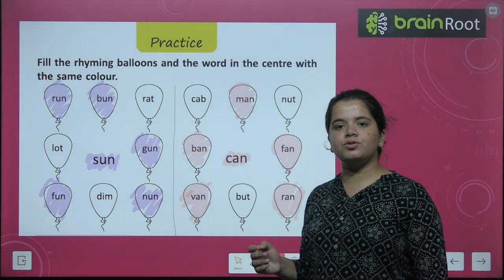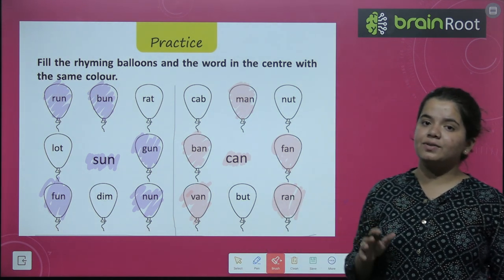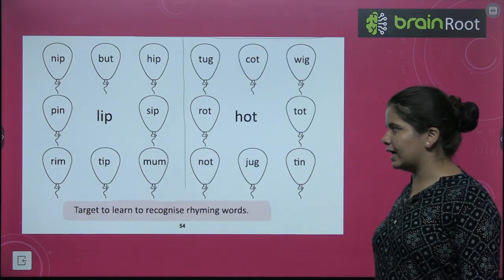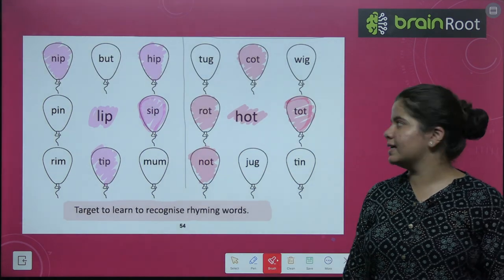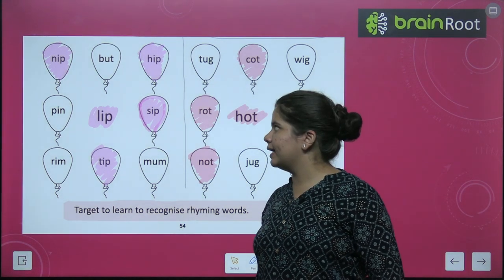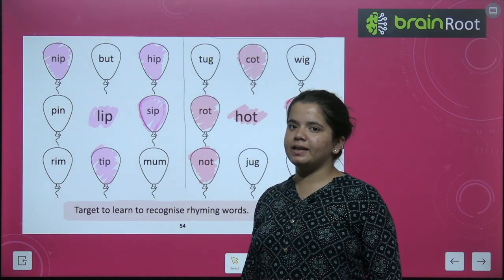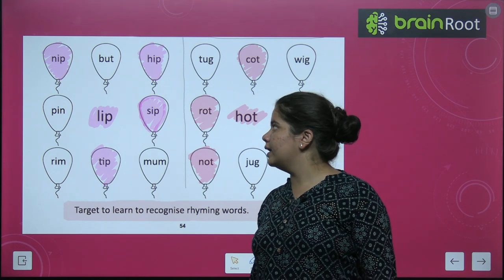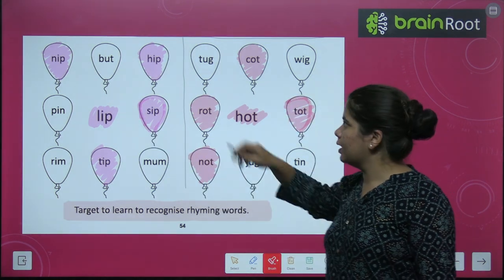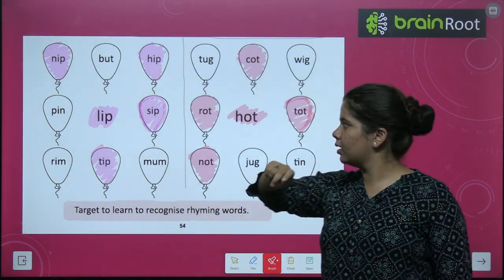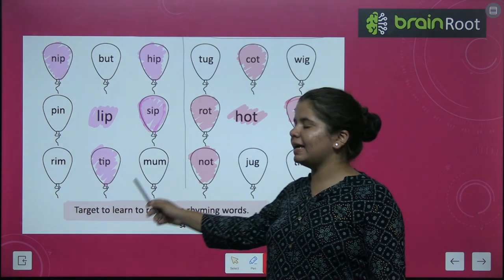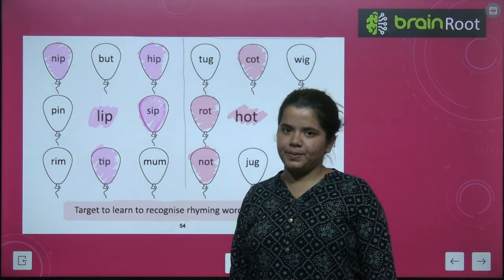Rhyming words are words that sound exactly like another word. Now next is 'lip'. For lip: N-I-P, nip. H-I-P, hip. S-I-P, sip. T-I-P, tip.